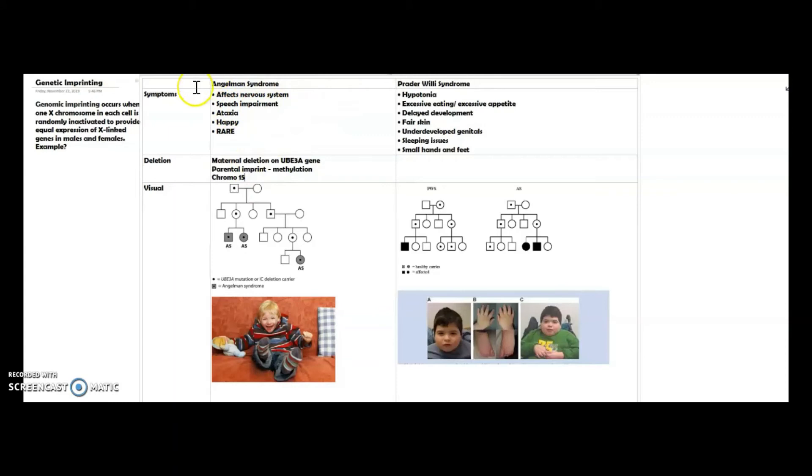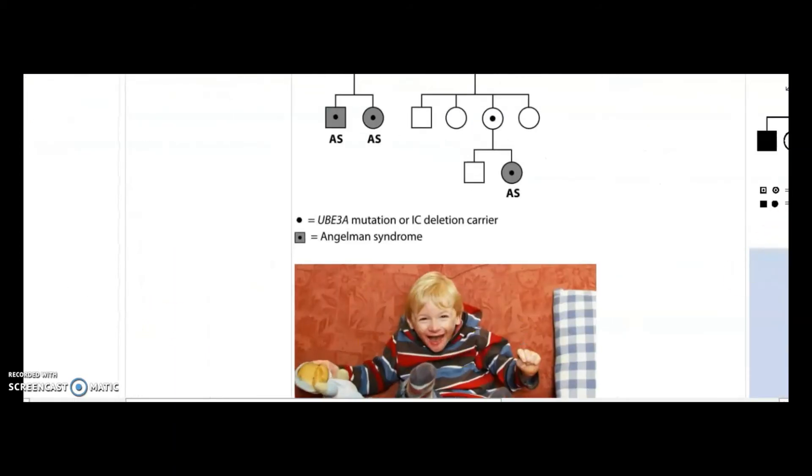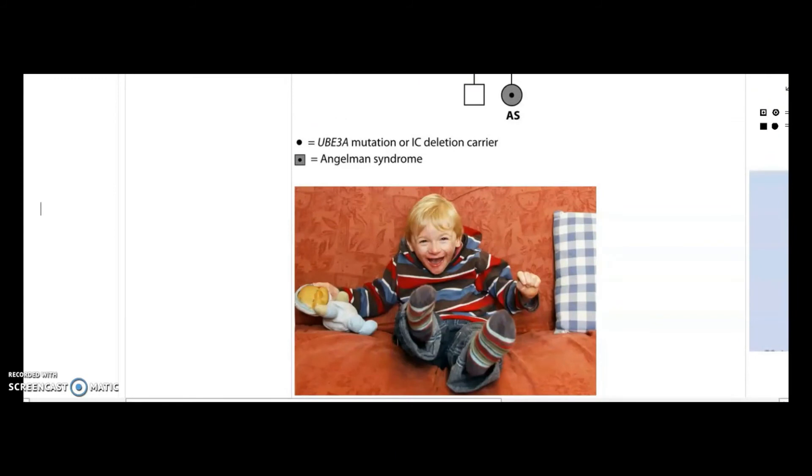Those are some basics for exactly where the deletion occurs, what's imprinted or silenced, what chromosome and where on the chromosome, and what gene does the maternal deletion occur on. Those are some main points you all need to know. Also, I found a picture of a child that has Angelman syndrome.